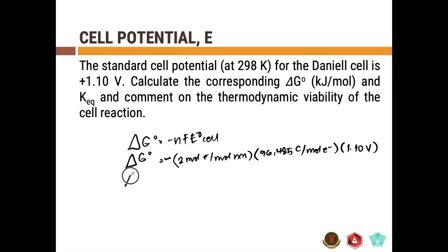So this gives us a delta G value equal to negative 212,267 joules per mole reaction. So the problem asks to express it in kilojoules per mole so that's negative 212 kilojoules per mole.